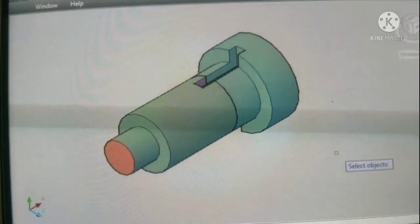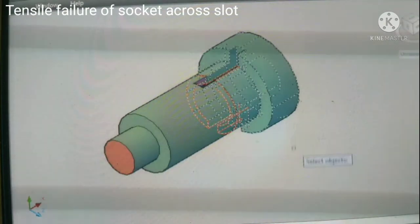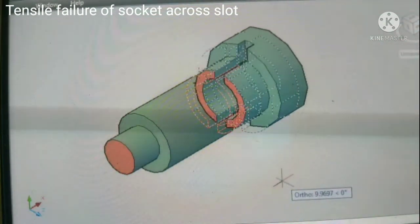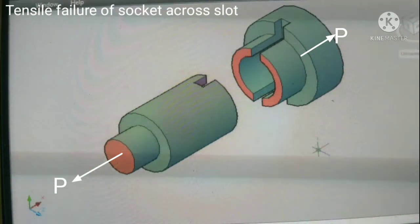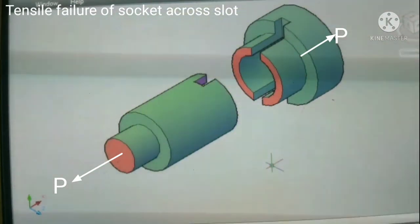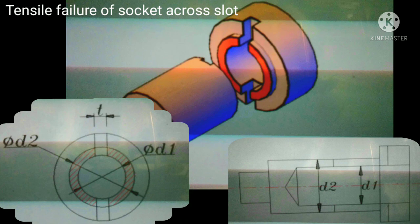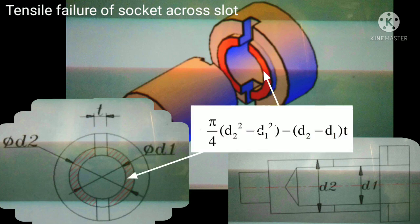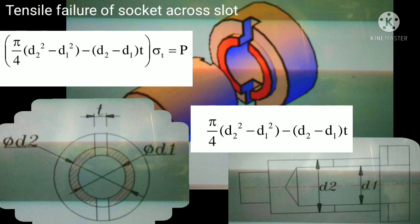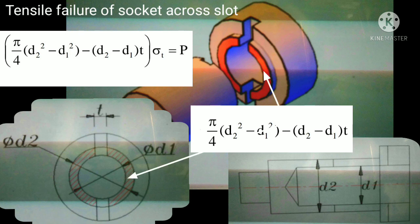Now we calculate the different types of failure of the socket part. First we calculate the tensile failure of socket across the slot. Here D2 is the outer diameter and D1 is the inner diameter of socket part, and T is the thickness of cotter. The tensile cross-sectional area is (pi/4)(D2² − D1²) − (D2 − D1) × T. So area × sigma T = P, where sigma T is tensile stress. From this equation we get D2, the outer diameter of the socket end of the rod.